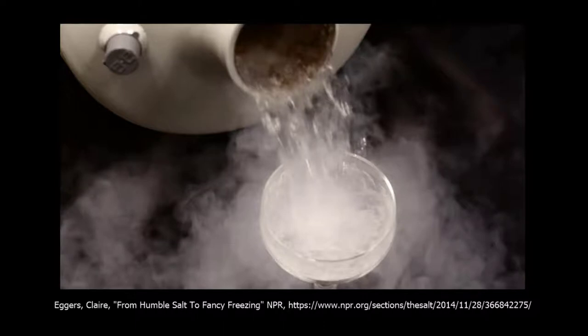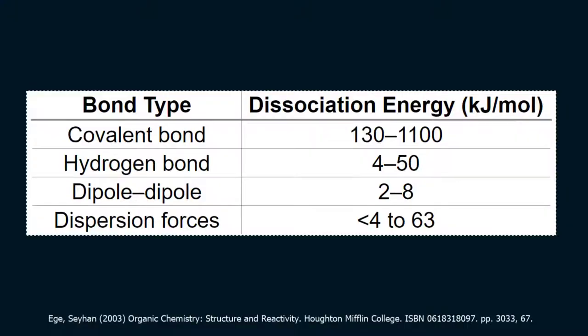Now, how do these forces compare in strength? To get an idea of bond strength, we can examine the energy we need to put into the system to break the bond. This is called the dissociation energy. We can see that our intramolecular bonds, that is, our covalent bonds, require the greatest amount of energy to break. And so these are our strongest bonds.